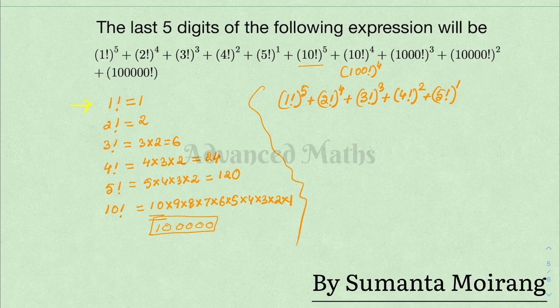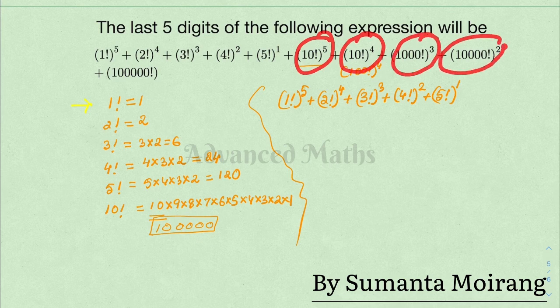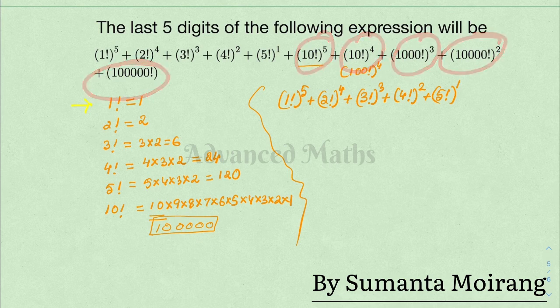So the last five digits, the last seven digits, and the last nine digits — the last five digits of those higher factorial terms are all zeros.